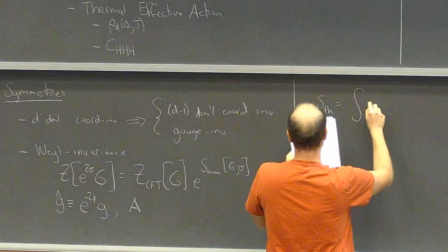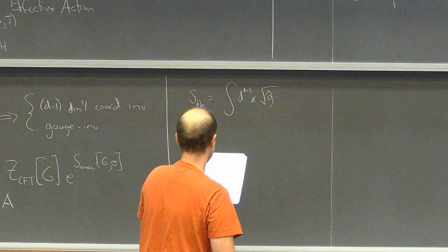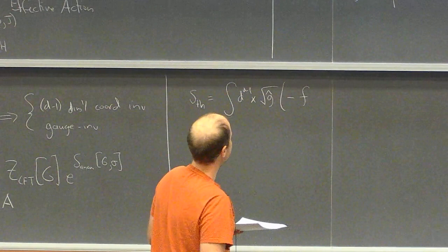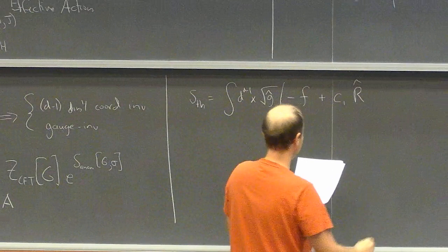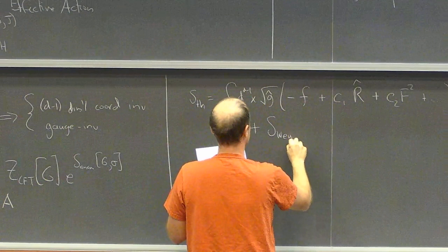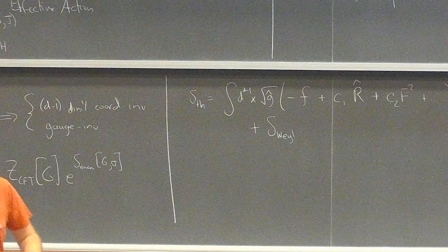What you find is that the thermal effective action has to be an integral of coordinate-invariant functions of g-hat and A, and such things are highly constrained. We can have root-g-hat and then, as usual in effective field theory, a derivative expansion: the leading term is a cosmological constant term, then sub-leading terms include c1 times R-hat (the scalar curvature associated with g-hat), a Maxwell term, and so on. We also need in general something to match the Weyl anomaly that depends on the Weyl anomaly coefficients — a and c in four dimensions, and more terms in higher dimensions.